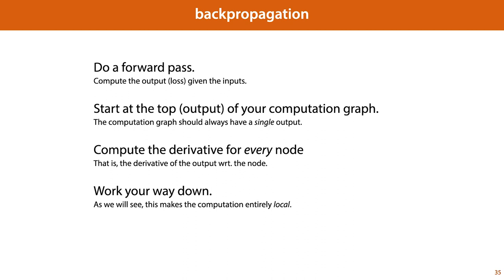With that, backpropagation is defined in these four steps. We do a forward pass, computing the output of our computation graph — the loss — given its inputs. And then for the backward pass, we start at the top of our computation graph, at the loss, and we work our way back down, computing the derivative for every single node, whether it represents a parameter or an intermediate value.